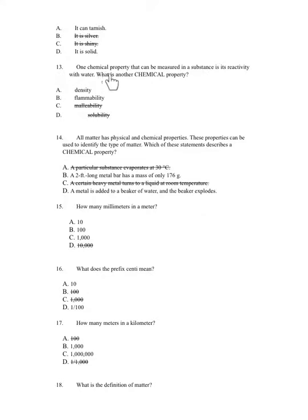Number 13. One chemical property that can be measured in a substance is its reactivity with water. What is another chemical property? A. Density. B. Flammability. C. Malleability. D. Solubility.